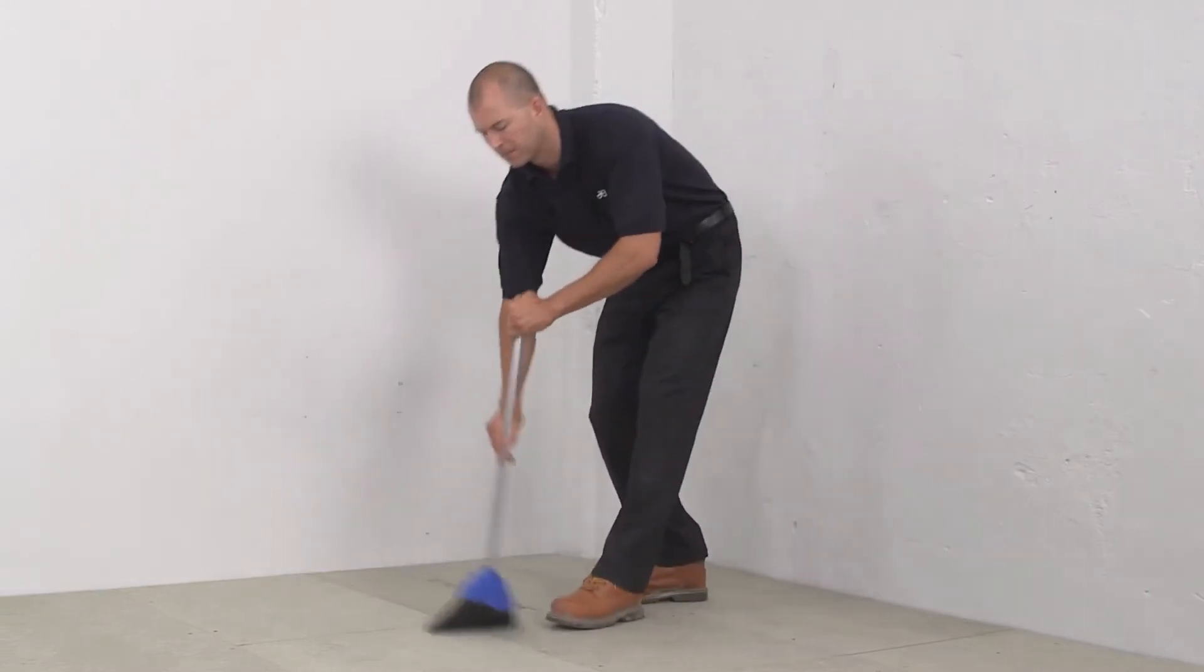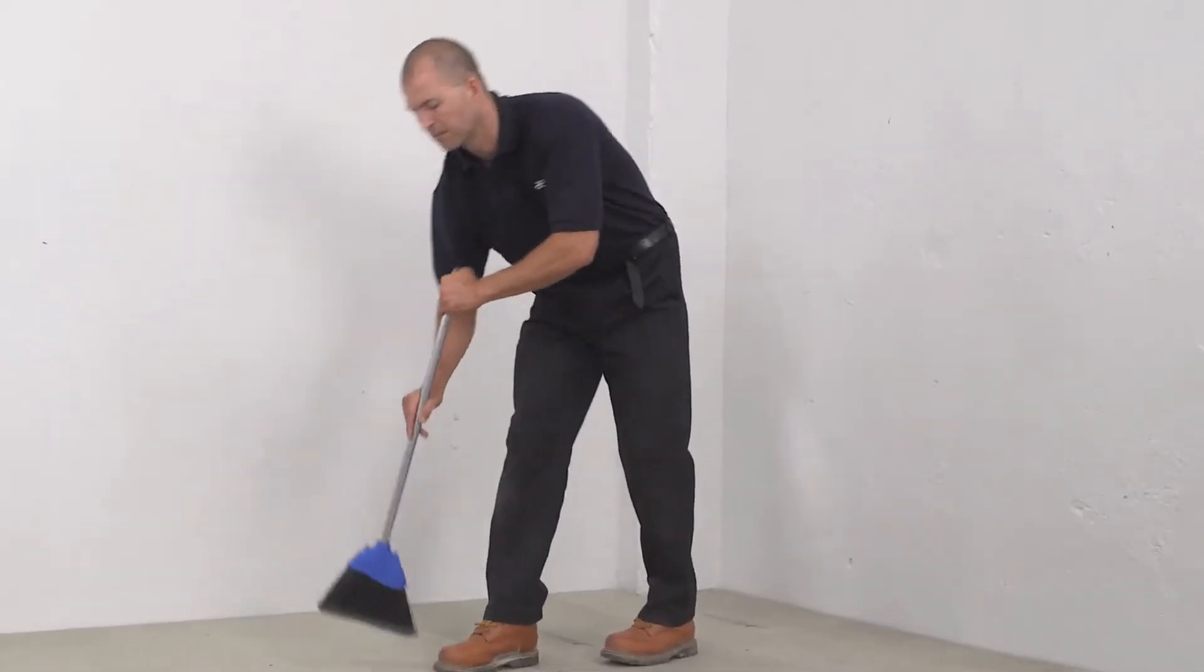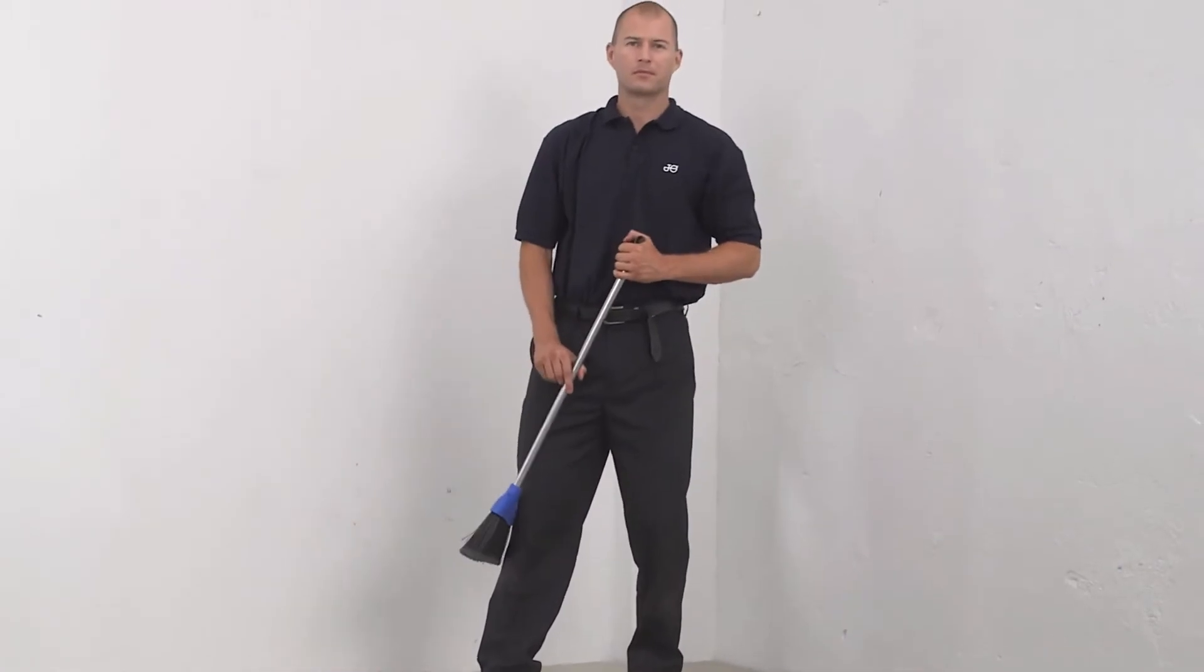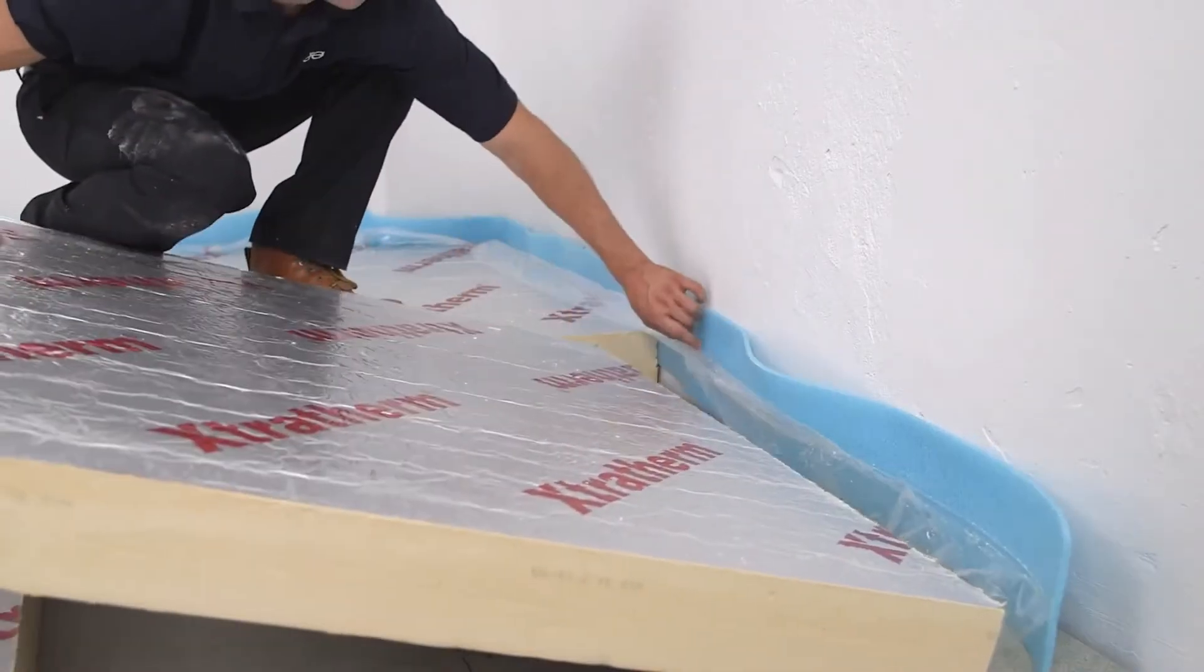First off, the insulation for the UFH should be fitted to a flat surface. This is important as the sheet insulation must be fully supported for maximum strength.